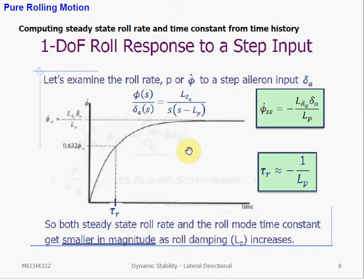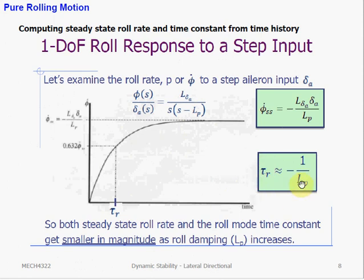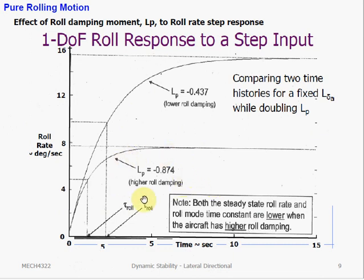Going back to examining the aircraft's roll rate step response — this is a first-order system. We can write the roll mode transfer function, finding that the steady-state roll rate and the time constant are both inversely proportional to the roll damping stability derivative LP. This indicates LP is critical in describing rolling motion dynamics. A high roll damping value means both the steady-state roll rate and the time constant will be small.